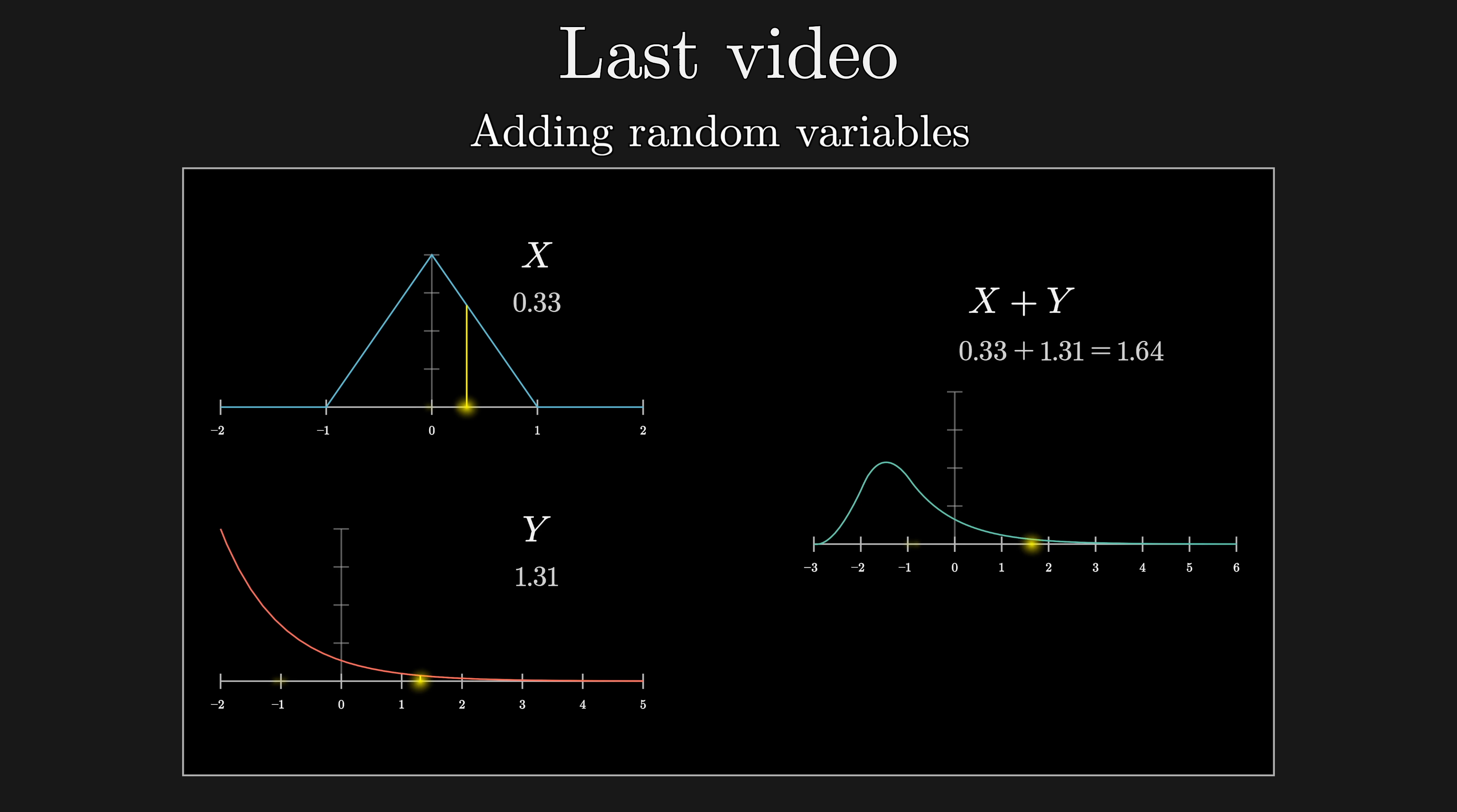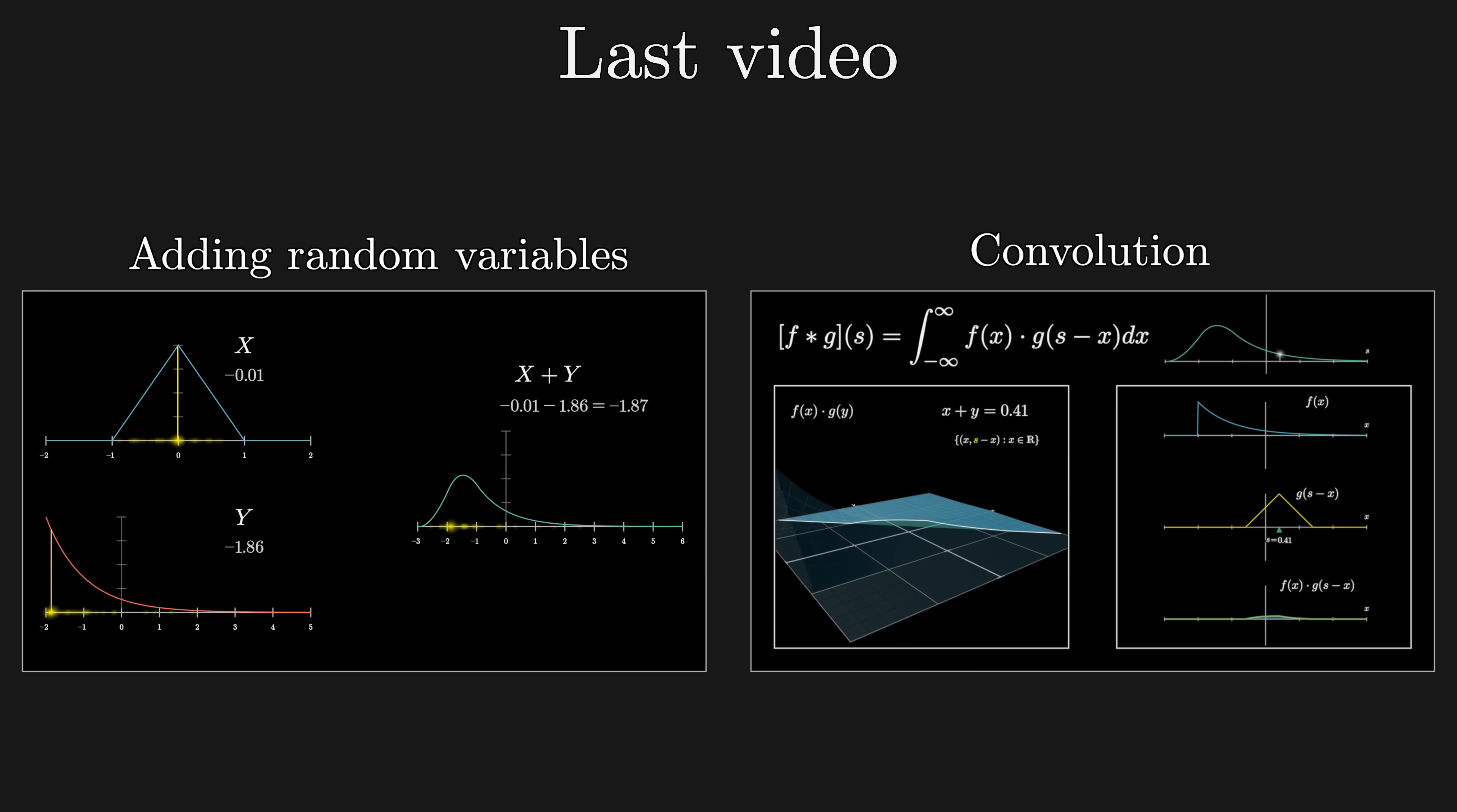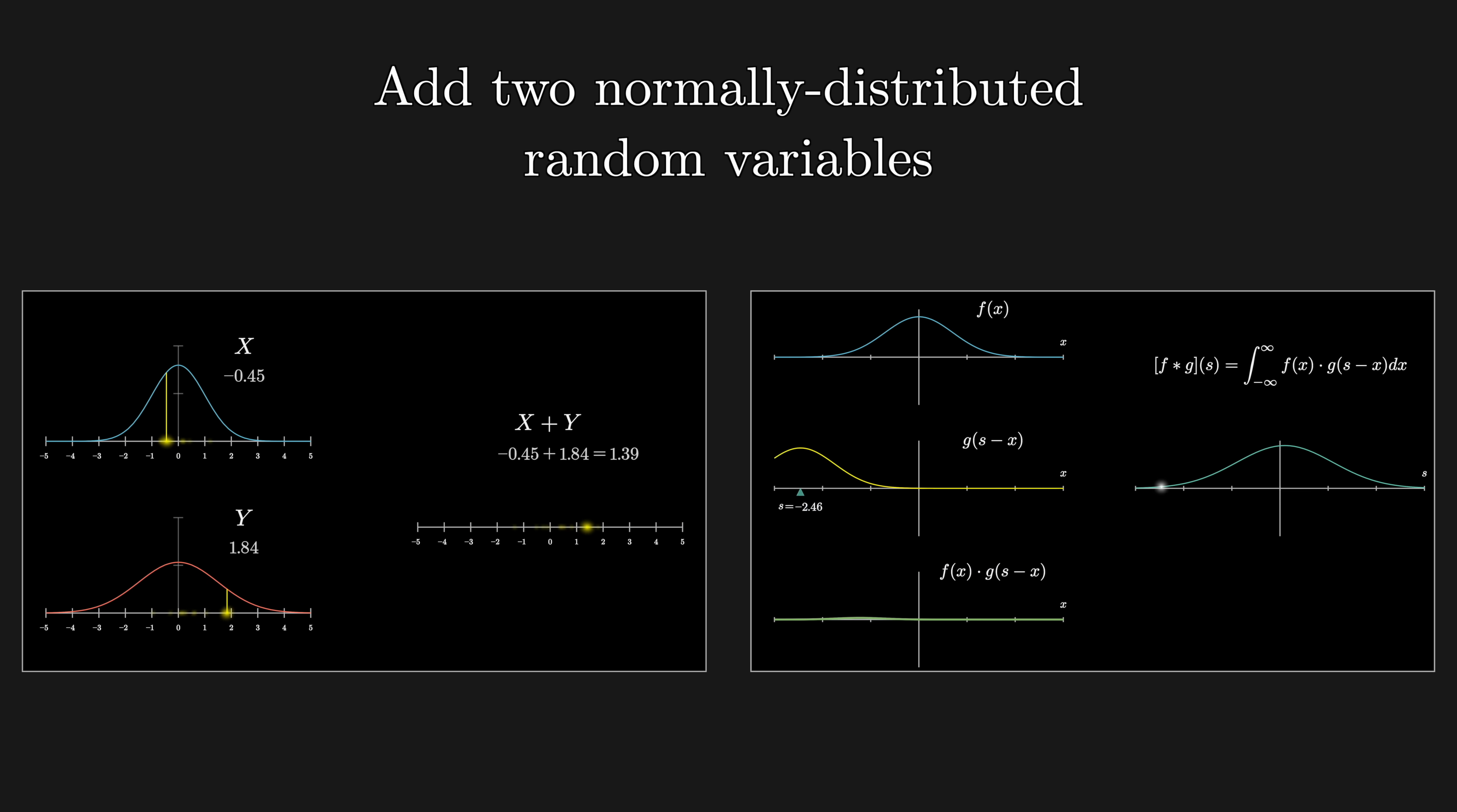In the last video we started talking about the math involved in adding two random variables. If you have two random variables, each following some distribution, then to find the distribution describing the sum of those variables, you compute something known as a convolution between the two original functions. And we spent a lot of time building up two distinct ways to visualize what this convolution operation really is. Today our basic job is to work through a particular example, which is to ask what happens when you add two normally distributed random variables? Which, as you know by now, is the same as asking what do you get if you compute a convolution between two Gaussian functions?